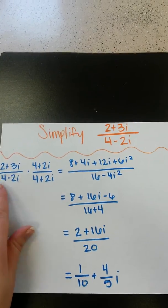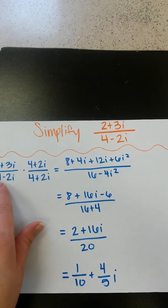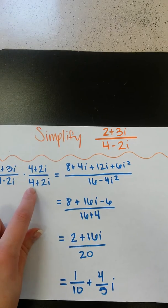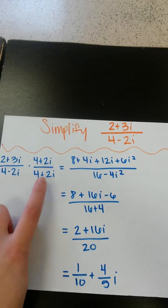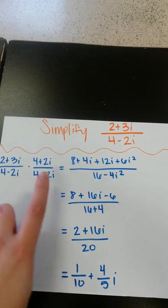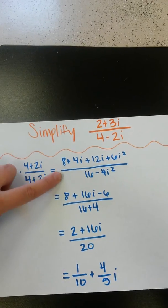And the same thing with the bottom. So 4 times 4 is 16. Next, we have a negative 8i and a positive 8i. So they cancel. And then we have a negative 2i times a positive 2i. And that's negative 4i squared. So then we reduce this.